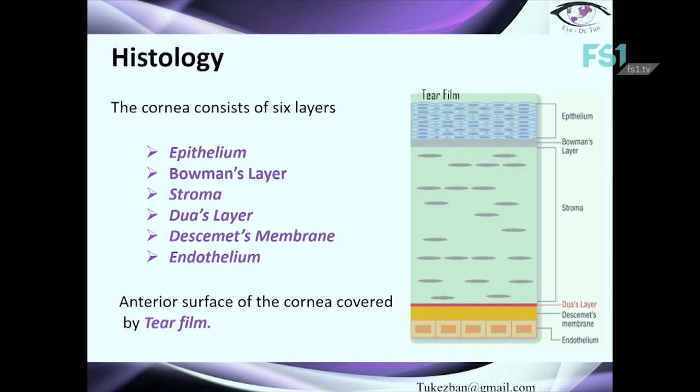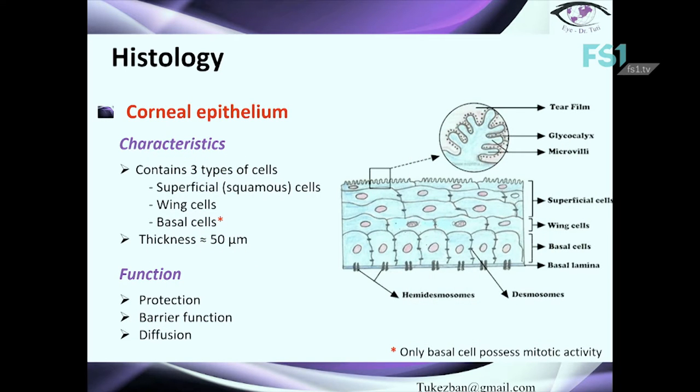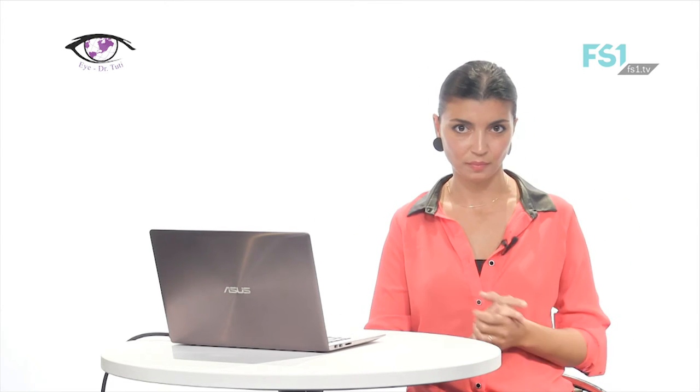Now let's briefly discuss histology. There are six layers of the cornea: epithelium, Bowman's layer, stroma, Dua's layer, Descemet's membrane, and endothelium — and of course the surface is covered by the tear film. The corneal epithelium contains three types of cells: superficial cells, wing cells, and basal cells. Thickness is approximately 50 microns, though it varies between individuals — sometimes 40, sometimes 70 microns. The main function of this layer is protection, barrier function, and diffusion.